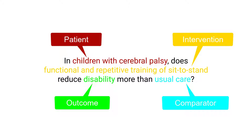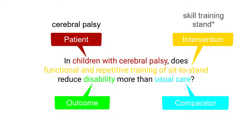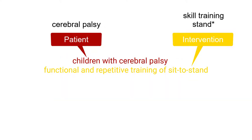Possible search terms for each PICO component are: cerebral palsy in the topic drop-down list for the patient; skill training in the therapy drop-down list, and stand for the intervention; usual care for the comparator; and disability for the outcome. Terms for the patient and intervention are probably the best place to start.